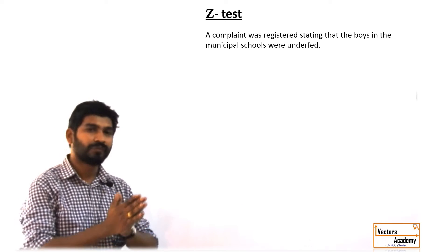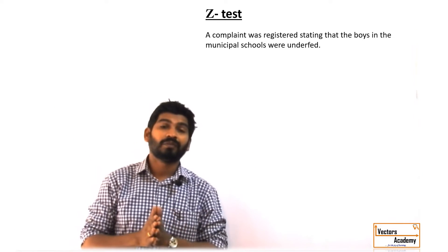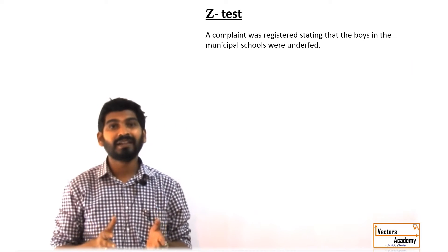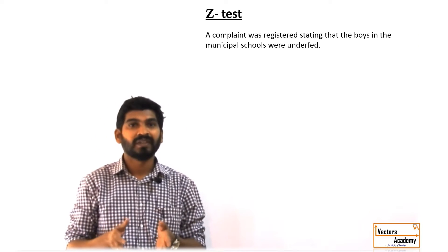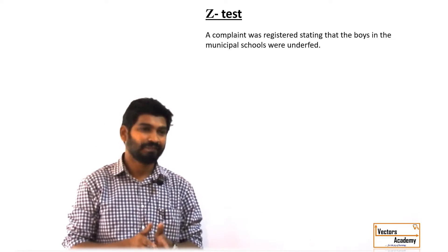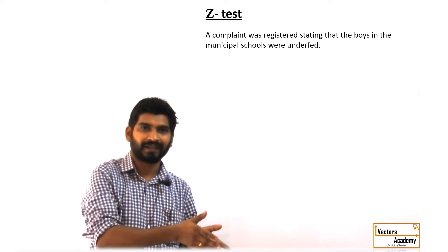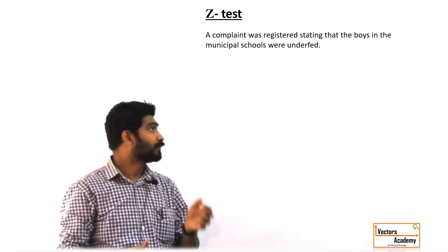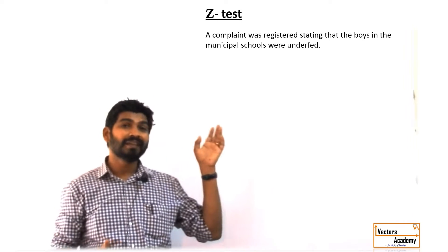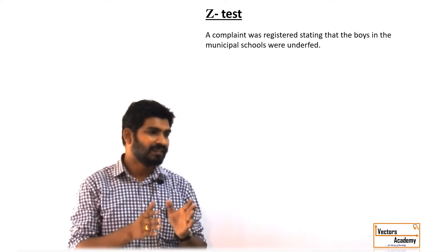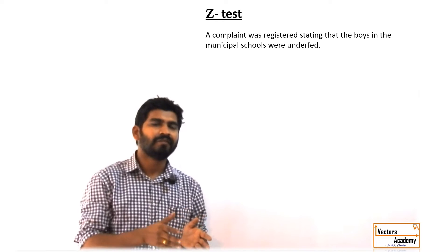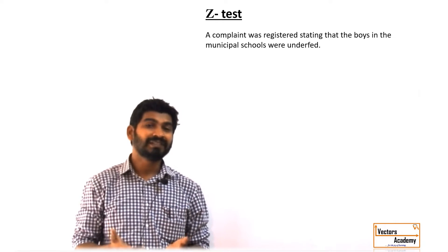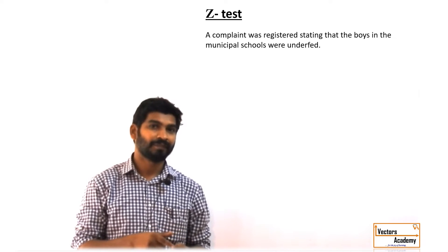They are not given proper food — that is the complaint. Now to find out whether the complaint is true or false, there are two ways. One is the practical way: just go to the spot and inspect whether the food is good or bad. But this way has a drawback because just by judging the food of one day one cannot conclude whether the complaint is true or false. So this is where the Z test comes into play.